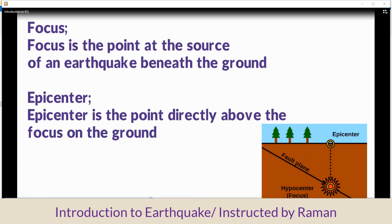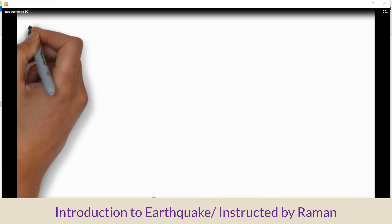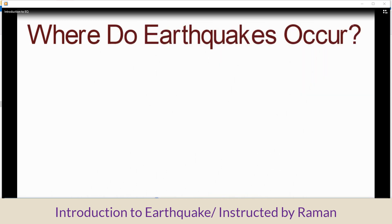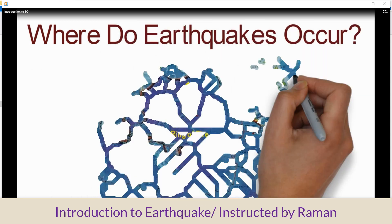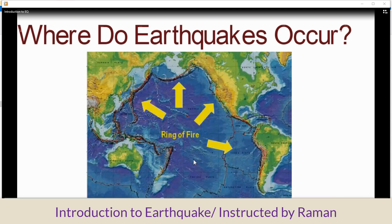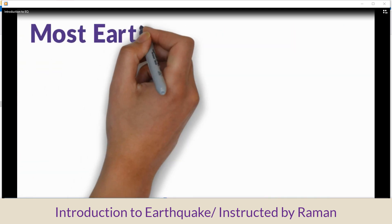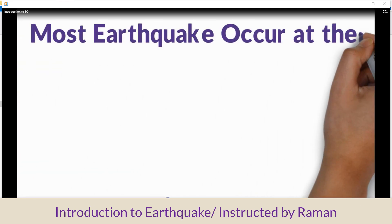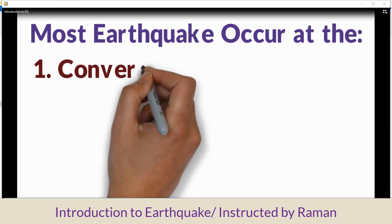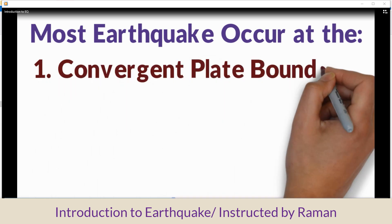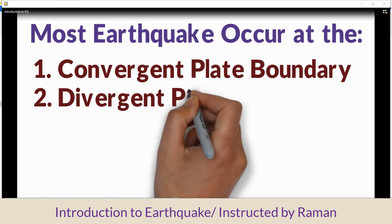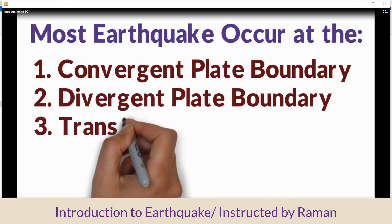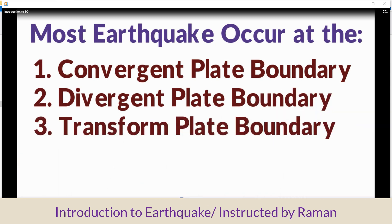The epicenter is the point directly above the focus on the ground. Where do earthquakes occur? Most earthquakes occur at convergent plate boundaries, divergent plate boundaries, and transform plate boundaries.